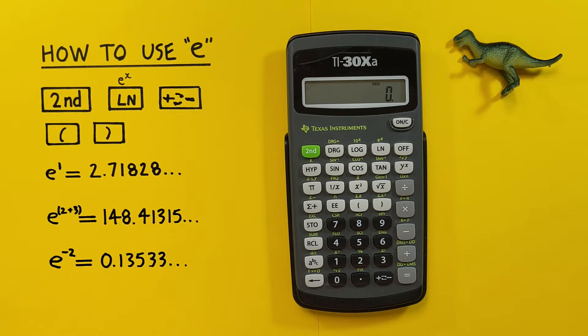Hello and welcome to HD Calcs. I'm Rick and in this video we're gonna have a look at how we can use the function e, also known as the natural antilog or Euler's number, on the Texas Instruments TI-30XA calculator.